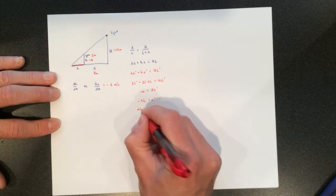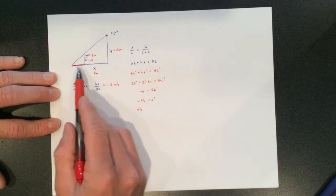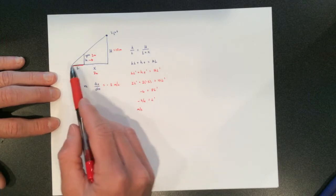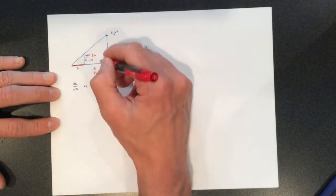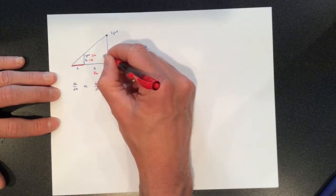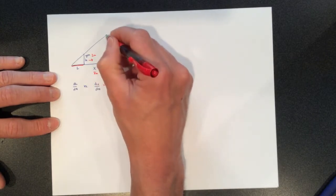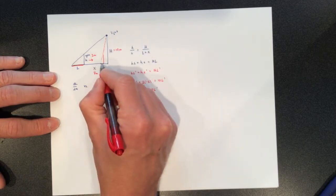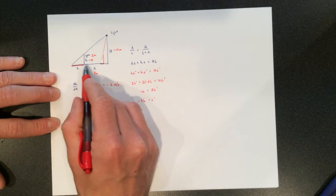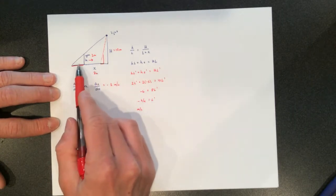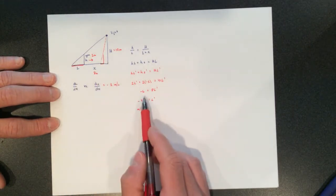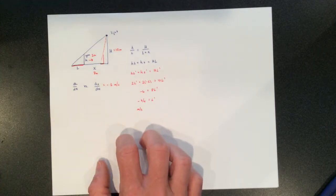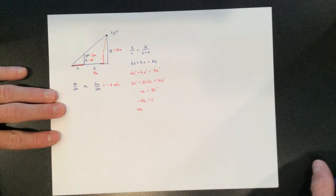Subtracting 2l' from both sides: -6 = 8l', so l' = -3/4 meters per second. That's the rate at which the shadow length is changing. As you walk closer to the lamp the shadow gets smaller and smaller — confirmed by the negative value. If you get very close to the light, the shadow is tiny, which makes physical sense.